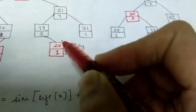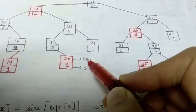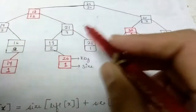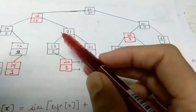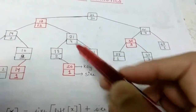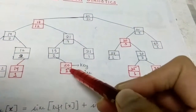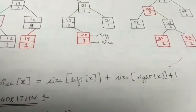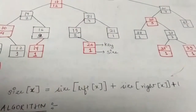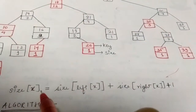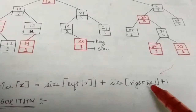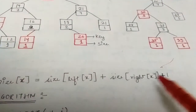The information we are concerned about is the key and the size of each node. There is a key value in each node stored in the upper block, and the lower block holds the size. The major property we care about is that size(x) equals size(left(x)) plus size(right(x)) plus 1.